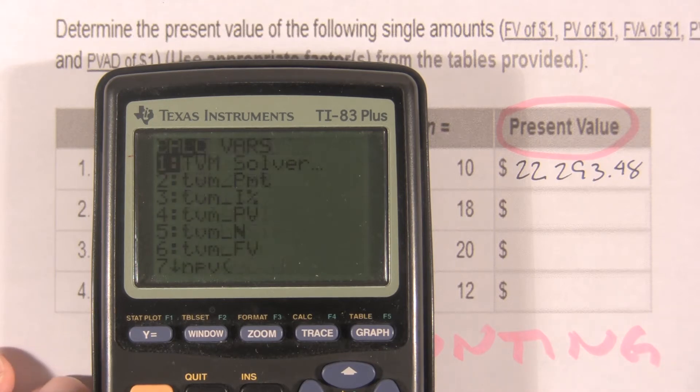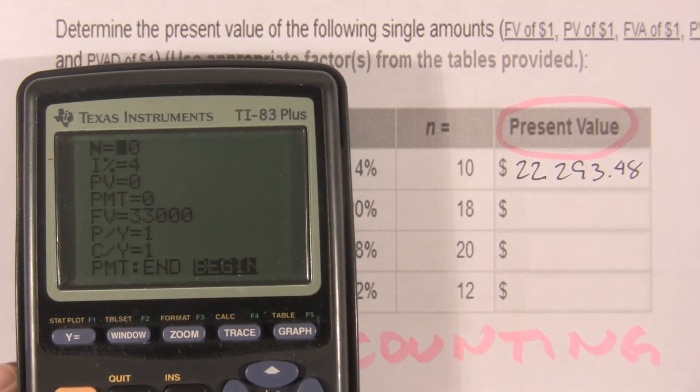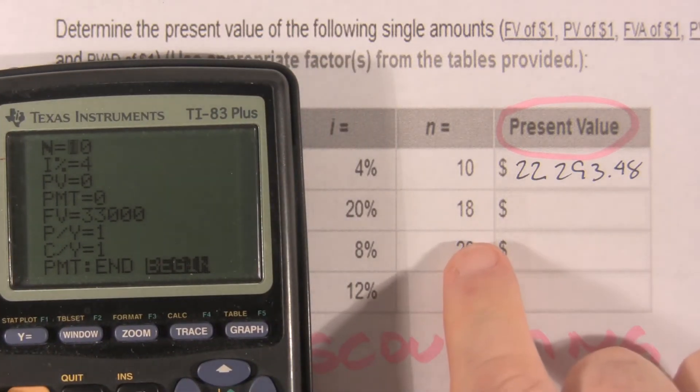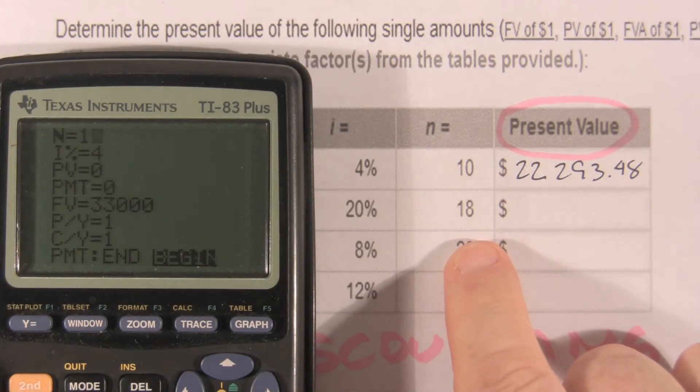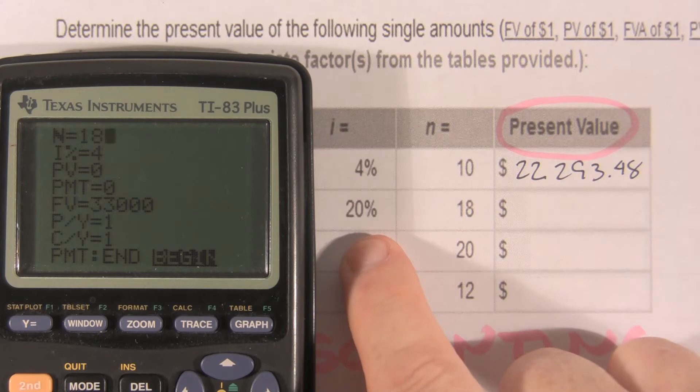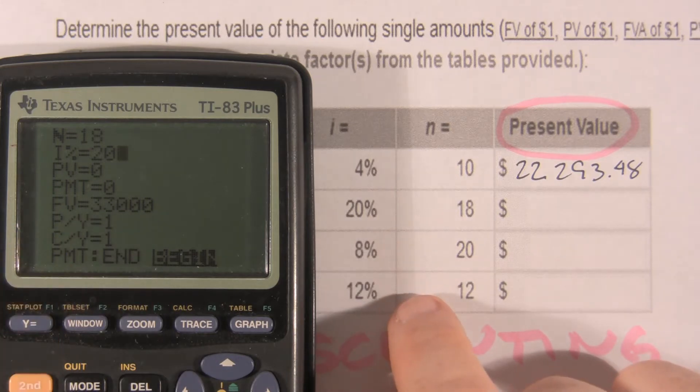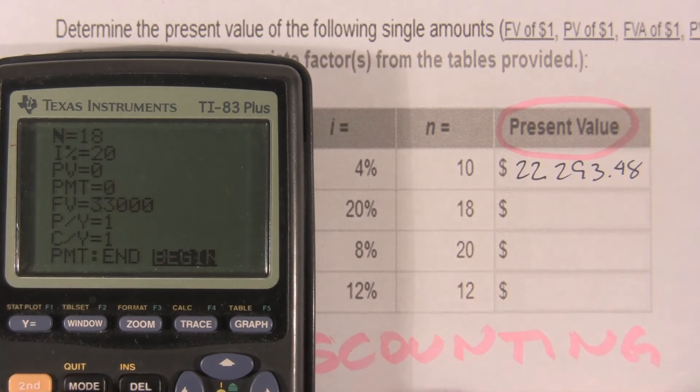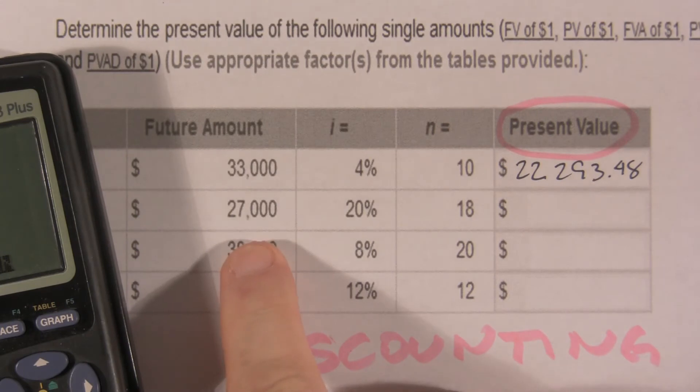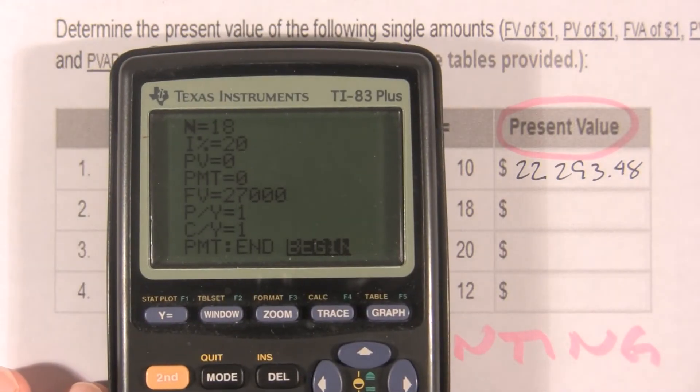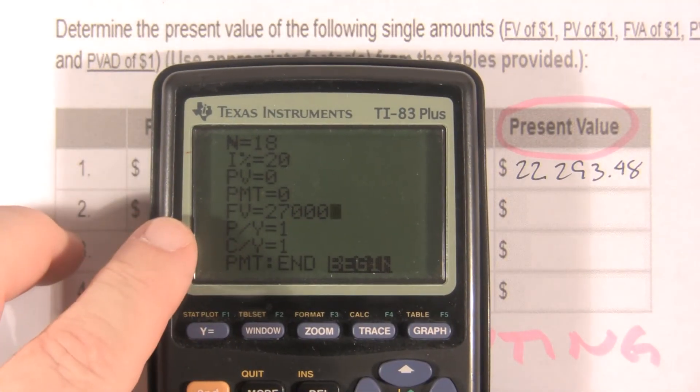Apps, finance, time value of money solver. Now, our N is not 10 for our second one, our N is 18. Our interest rate is 20. We're looking for the present value, so we leave that blank. We're not making annual payments. We know that our future value will be 27,000. And that's the information we need. We're looking for the present value, we're not making any payments.